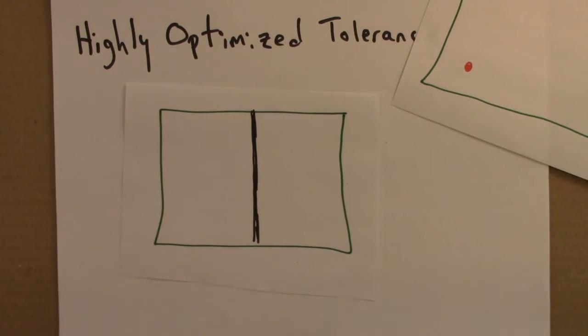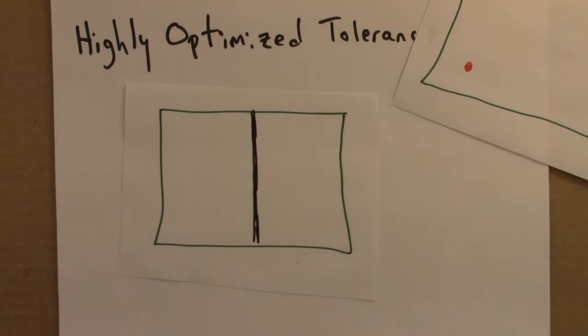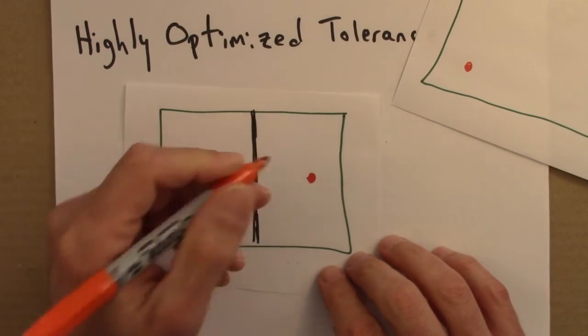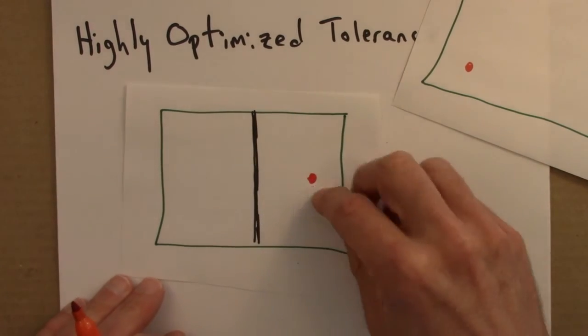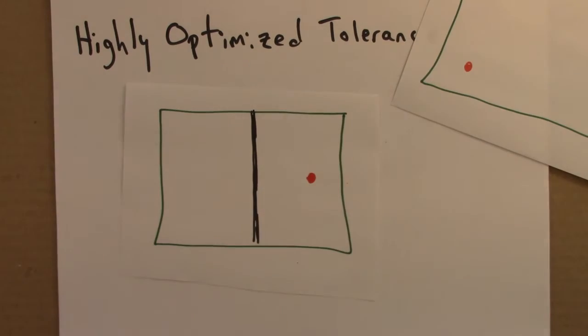so that if there's a fire in one half, it can't spread to the other half. Now if there's a spark, a lightning strike, these might hit at random. Boom, it hits here. That's bad. All this burns. But this side doesn't burn. So that's great. The fire break has been successful.